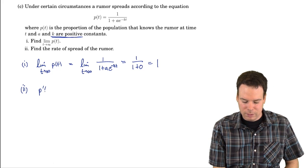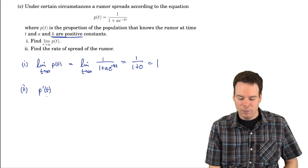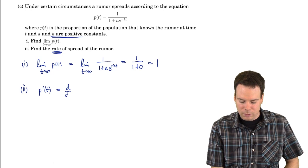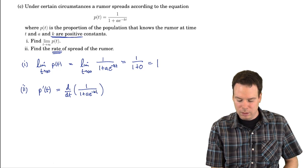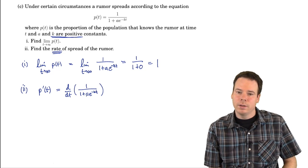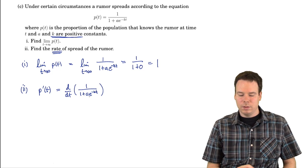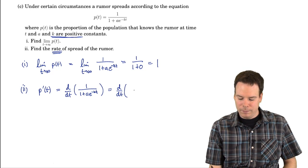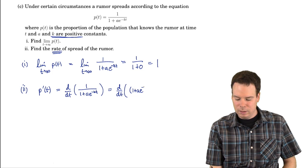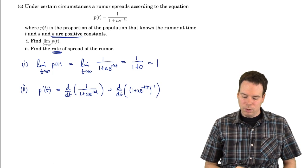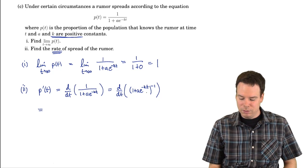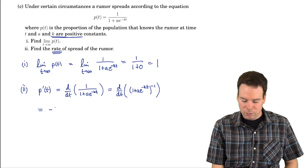The rate of spread of the rumor is p'(t) — rate means derivative. So we're looking at the derivative of 1 over (1 + ae^(−kt)). We could use the quotient rule, but I'll observe that this is a quotient that's actually a reciprocal, so I can write it as (1 + ae^(−kt))^(−1) and use the chain rule. The derivative of the outside function brings the −1 down and reduces the exponent by one, using the power rule.